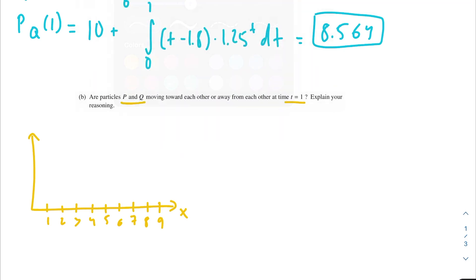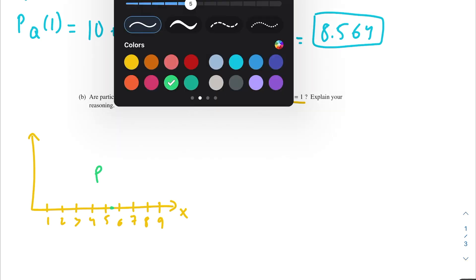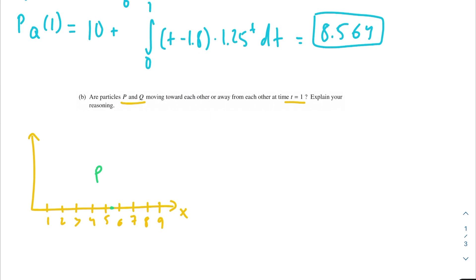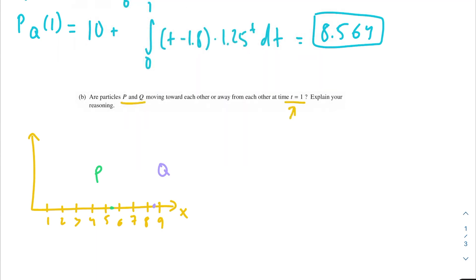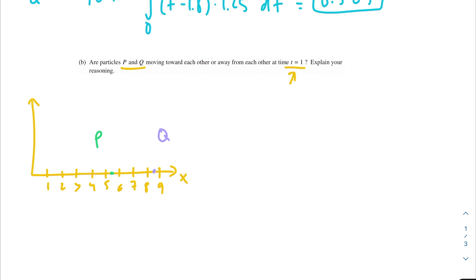So at time t equals 1, we know that our particle P is at 5.371. That's what we determined in the last problem. We know that the position of particle Q is at 8.564. So we could label it like this, just so we have a visual. We can use our velocities at time t equals 1 to determine which direction P and Q are moving in. Since they're moving along the x-axis, they're either moving forward or backwards, and the sign of our velocity will tell us which direction they're moving in.